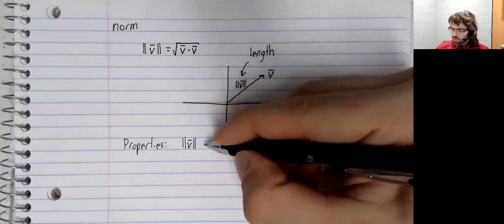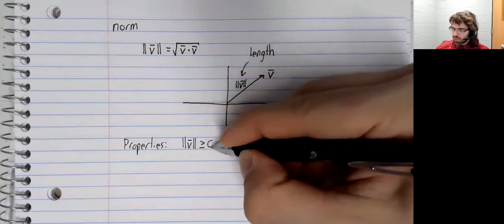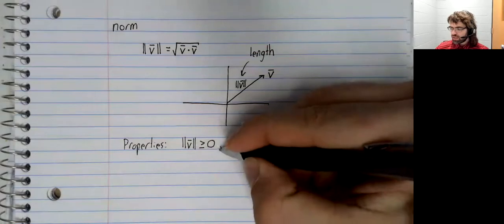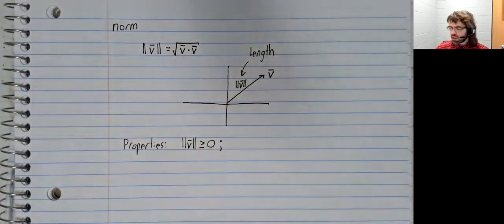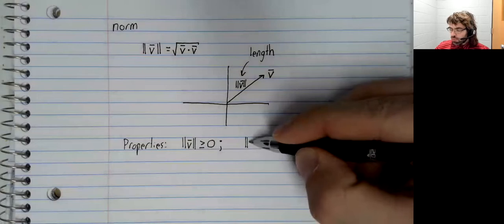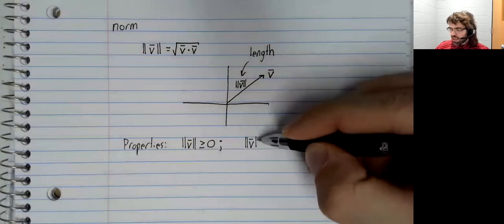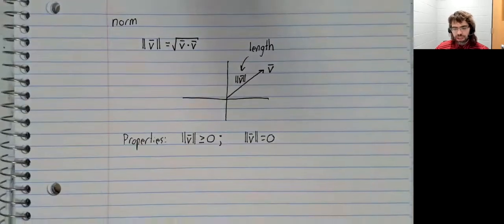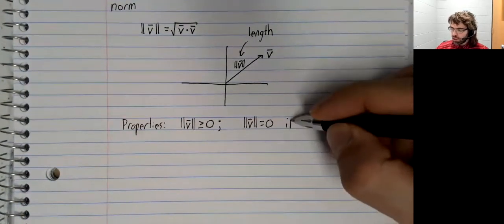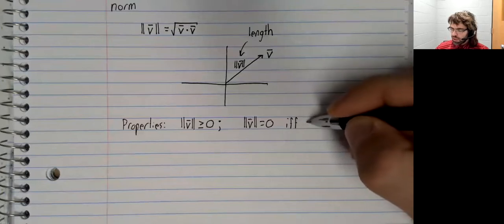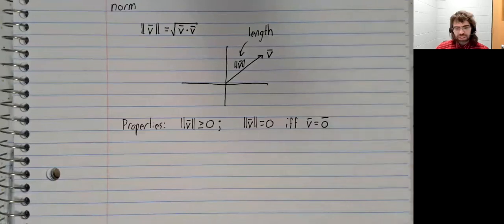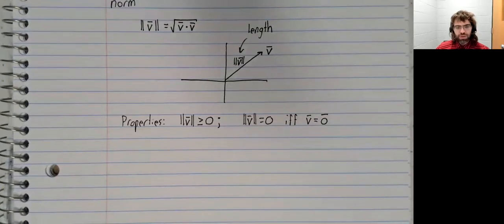The norm of the vector is always greater than or equal to zero, because a vector can't have negative length. In general, a vector can't have zero length. The only way a norm can be zero is if the vector is the zero vector.